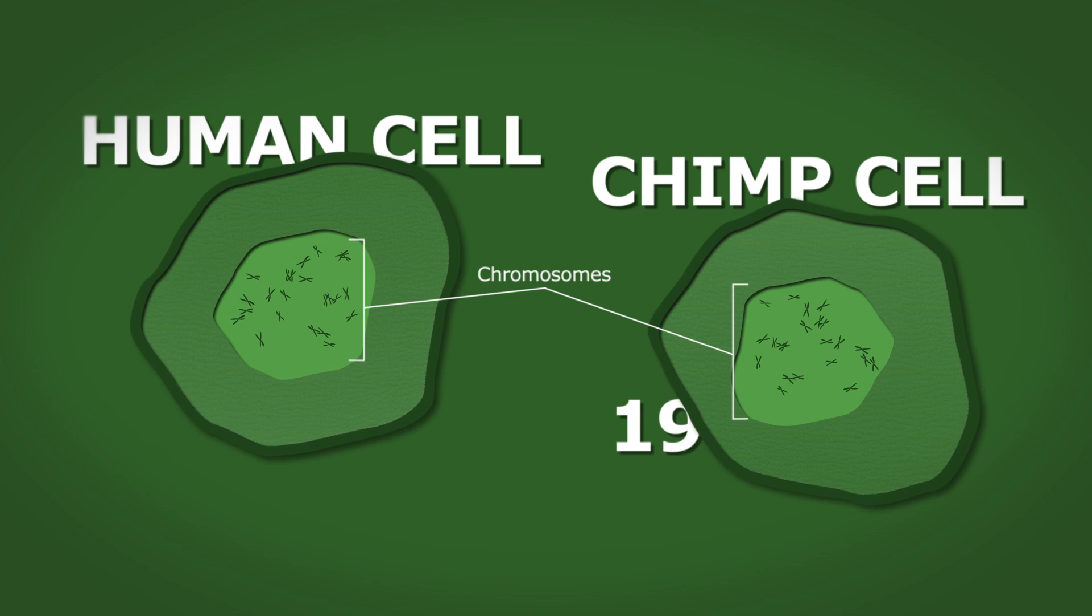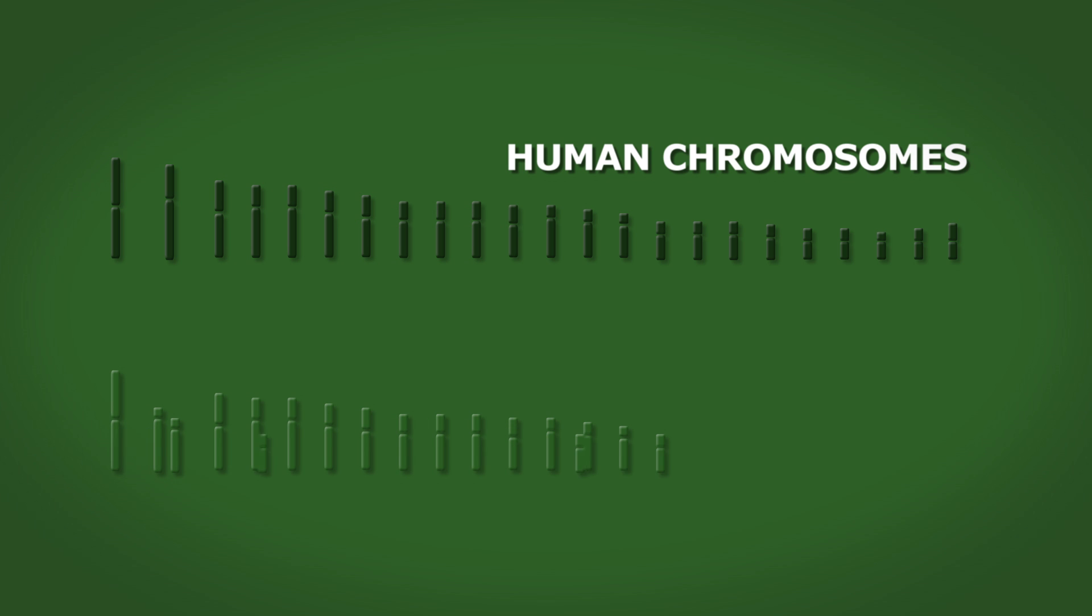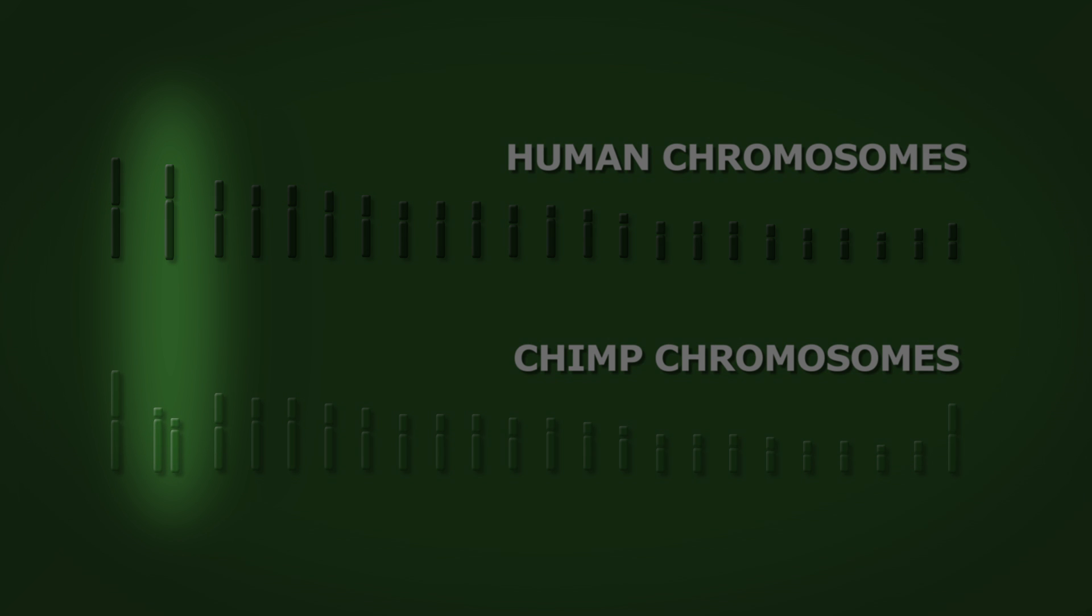Chimpanzees and other great apes have 24 pairs of chromosomes, while humans have just 23. If humans share a common ancestor with other great apes, as evolutionary theory proposes, we would predict that at some point in the distant past, two chromosomes fused together in an ancestor of modern humans.